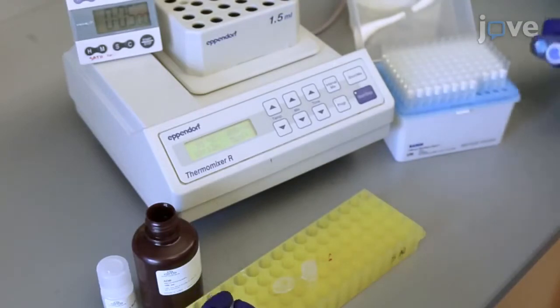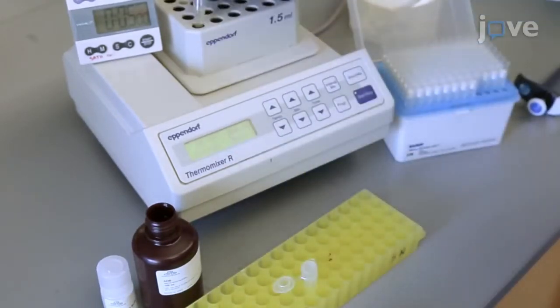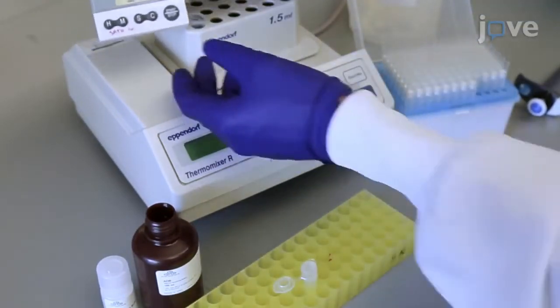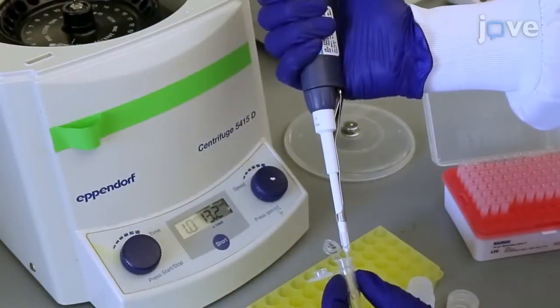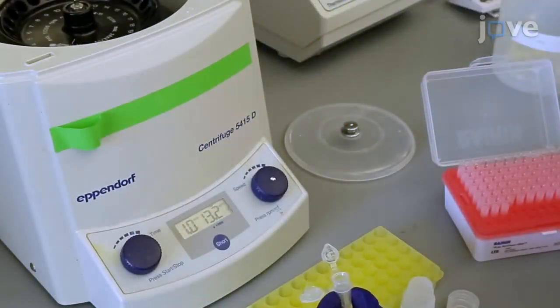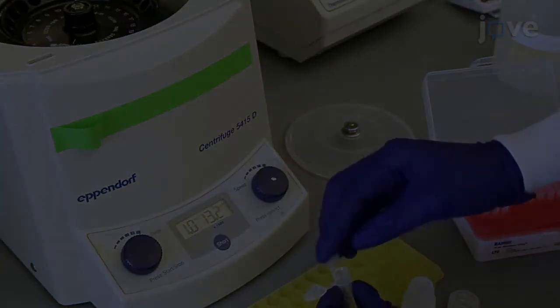Using a commercial gel purification kit, extract the DNA from the agarose gel according to the manufacturer's instructions. Then dilute the DNA into 10 to 15 microliters of TE buffer to obtain a constant 3.5 microgram of the DNA.